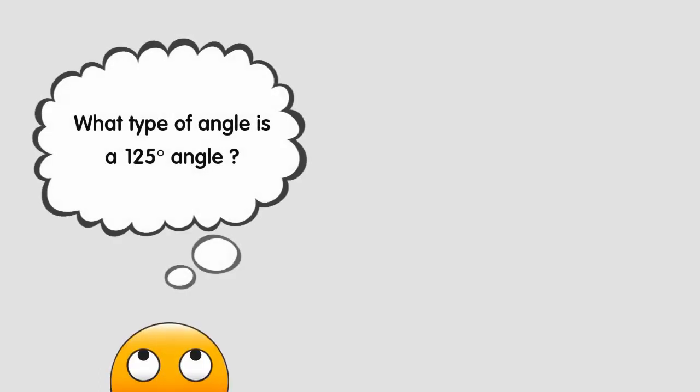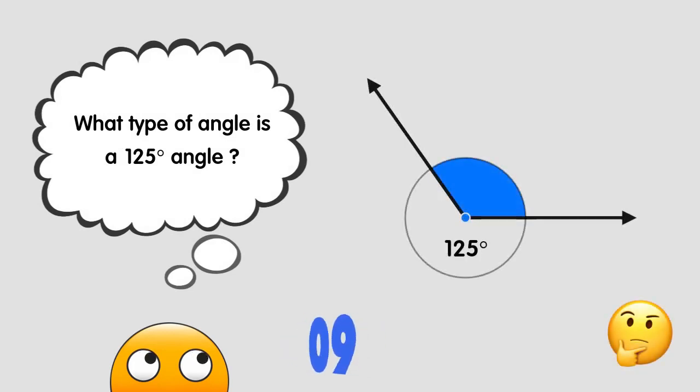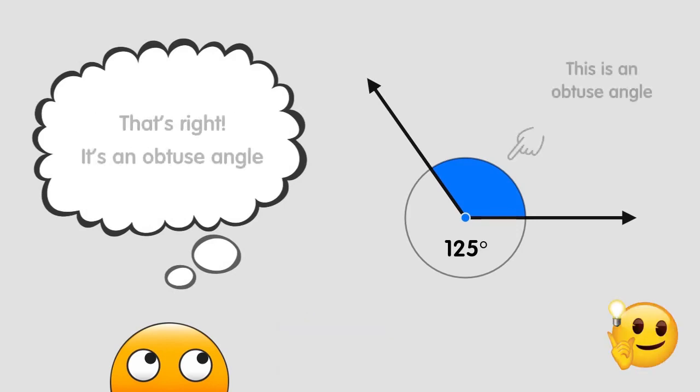What type of angle is a 125 degree angle? That's right, the answer is an obtuse angle because a 125 degree angle is bigger than a right angle that is 90 degrees.